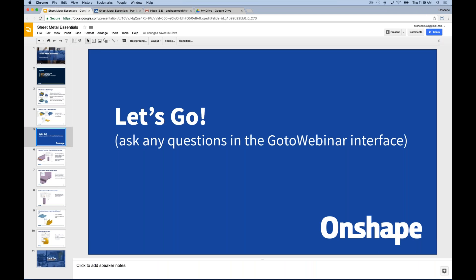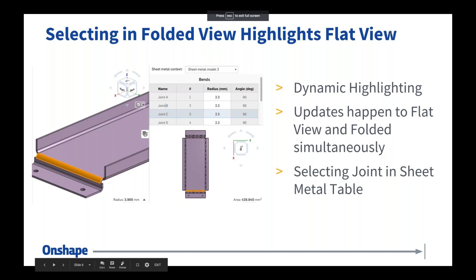Now I want to jump back to the slides to go over a few things that a lot of sheet metal users ask about. One of the first things I always mention is in the folded and flat view, you can select in either place and it will update automatically. You can also select in the table view and it will select the corresponding edge or radius. You can make any change in all three places and they automatically update. If you chose a combination that can't unfold, you would immediately see that in the flat view — overlapping edges with a big red indicator that this is not unfoldable.